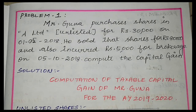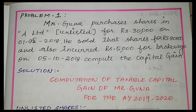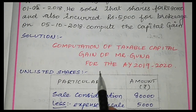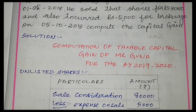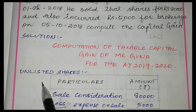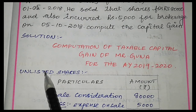When you have a problem to solve, you should know 3 points: first, date of purchase; second, date of sale; and third, type of asset. With these 3 pieces of information, we will be able to know the type of asset — that is, short-term or long-term capital asset. Computation of taxable capital gain of Mr. Gunnar for the assessment year 2019-2020.